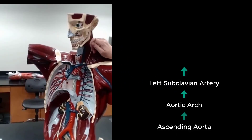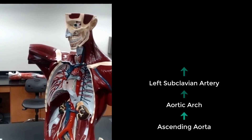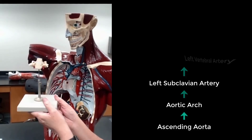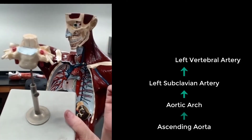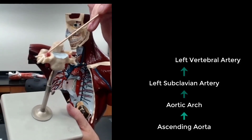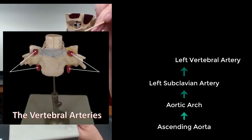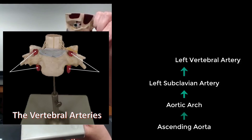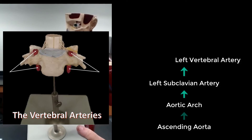The vertebral artery branches from there and arches inward, going towards the spine. It ends up traveling through the vertebral foramen in the cervical portions of the spine, continuing to travel superiorly.